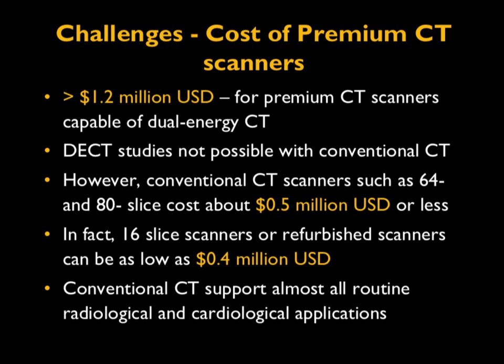By contrast, a conventional CT is much cheaper — a 64-slice or 80-slice scanner costs about less than half a million dollars, and a 16-slice or refurbished scanner can be as low as $400,000. Conventional CT supports almost all routine radiological and cardiological applications. A 64-slice scanner can do dual energy CT, but the only method is scanning the patient twice at two different energies, raising concerns about radiation dose.